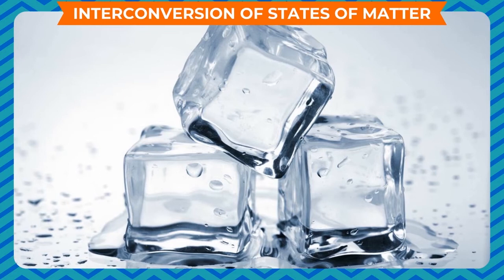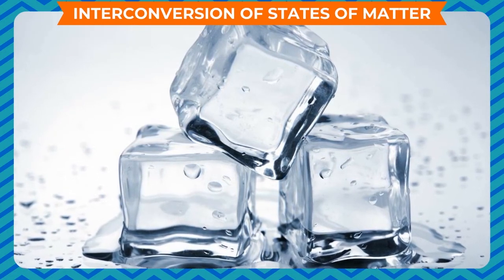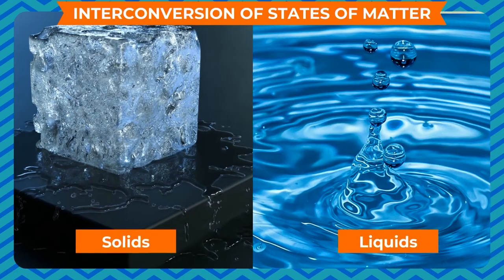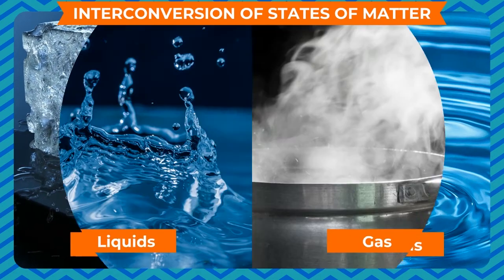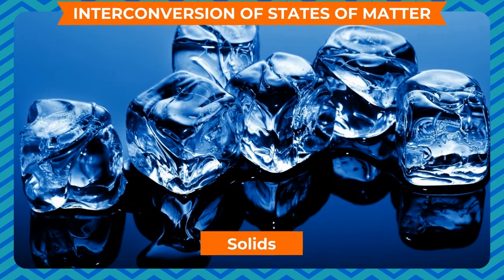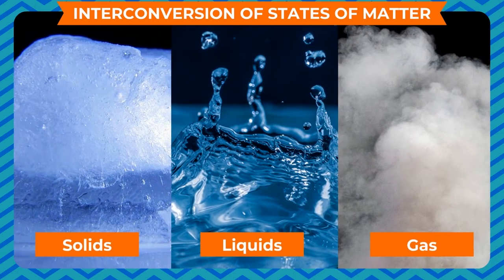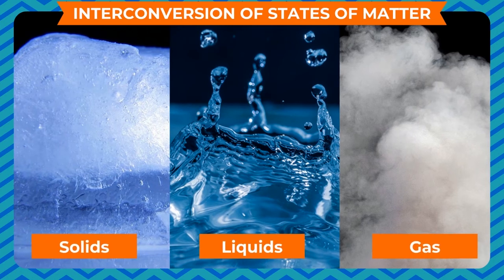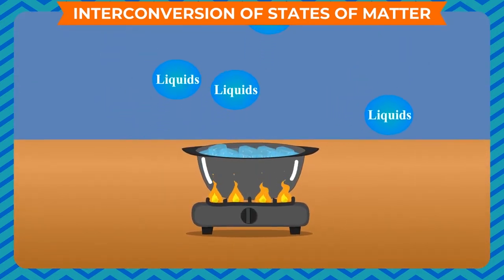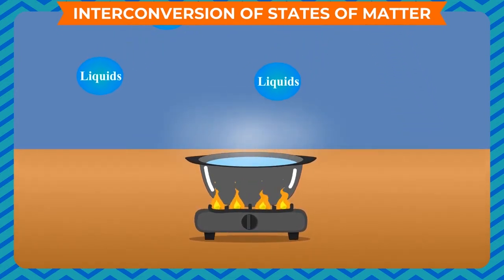If we release a gas in a room — for example, a deodorant — the molecules spread throughout the whole room and fill it completely. A matter can change its state from one form to another: solids can be converted into liquids, liquids into gas, and gas into solids. This conversion is called interconversion of states of matter.